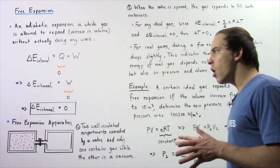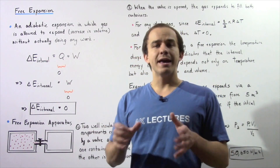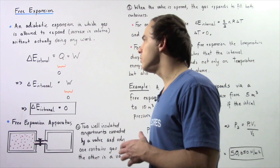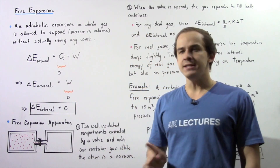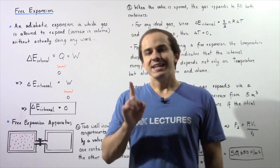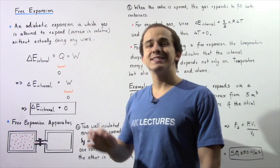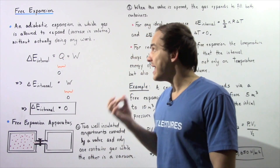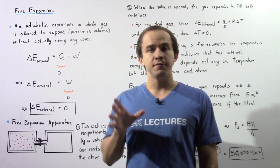Recall that according to the first law of thermodynamics, the change in internal energy of our gaseous system is equal to the sum of Q and W, where Q is the energy transfer as a result of heat and W is the energy transfer as a result of work. In any adiabatic expansion, Q is zero by definition, so there is no energy transfer as a result of heat.